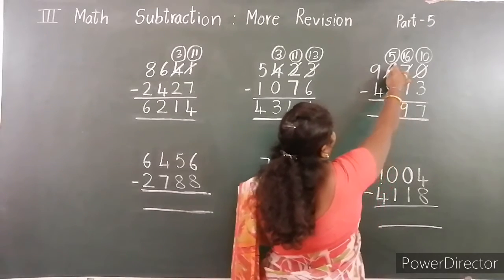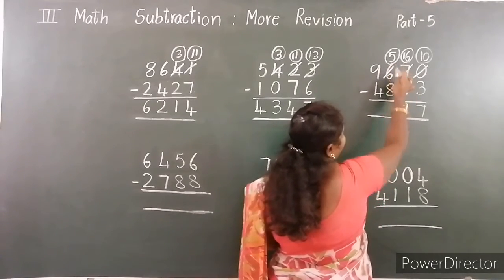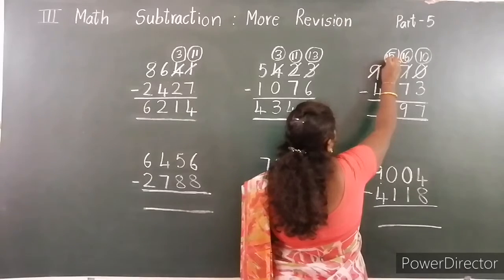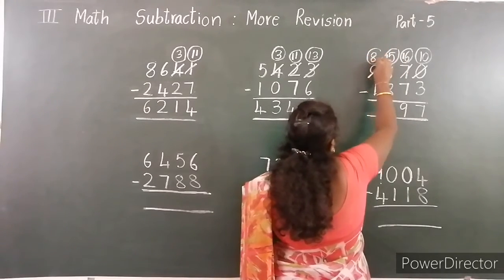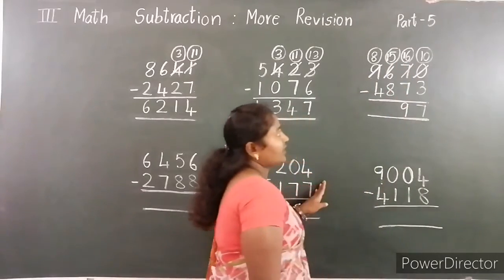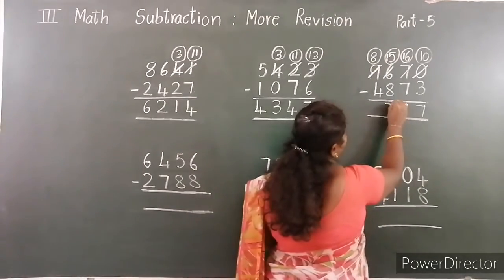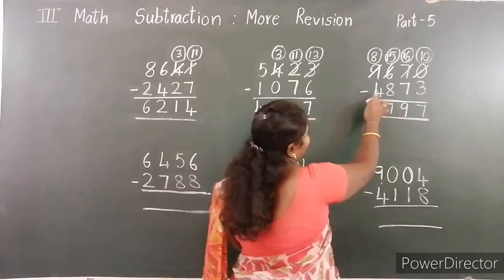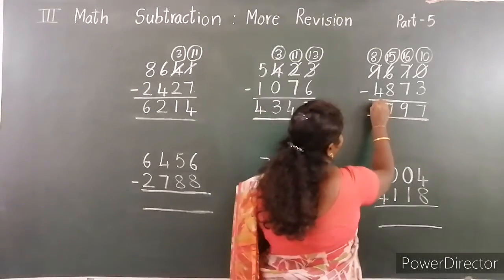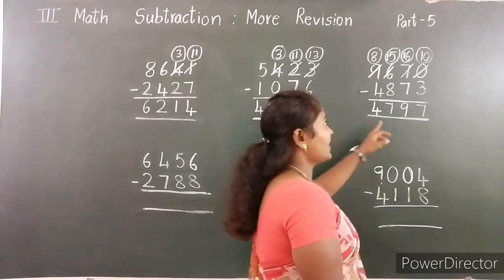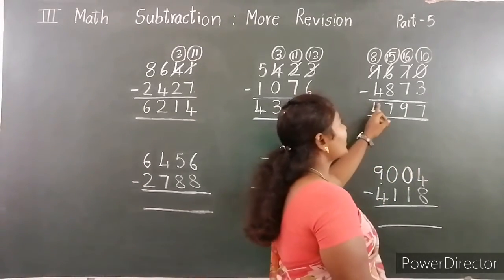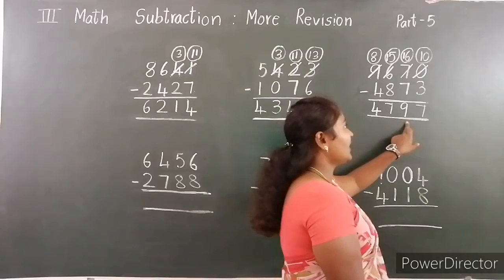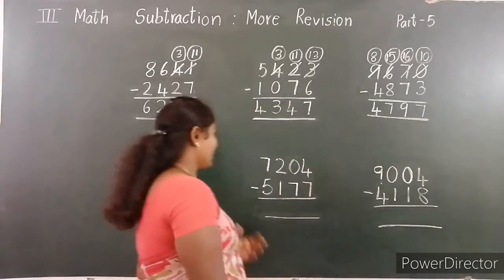Hundreds place: 5 minus 8. 5 is smaller than 8, so borrow from the next place. Here 15, here 8. 15 minus 8 — the difference is 7. Thousands place: 8 minus 4 is 4. So 9,670 minus 4,873 — the difference is 4,797.